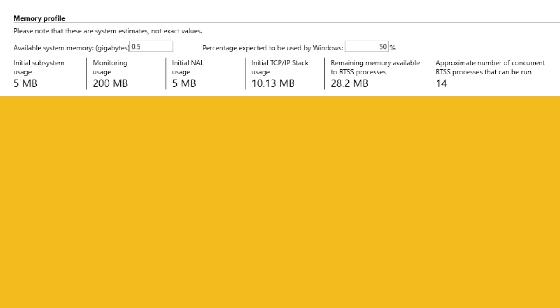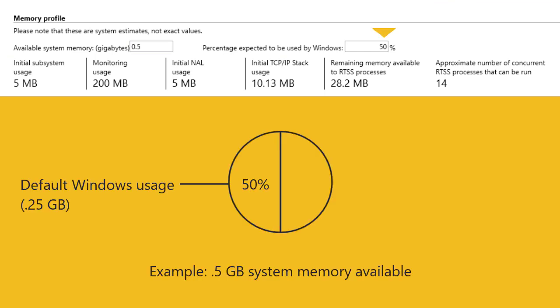By default, RTX 64 estimates that 50% of the available memory will be used by Windows. You can change the Windows usage percentage to suit the needs of your Windows applications.